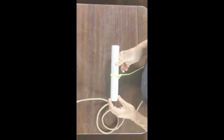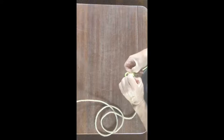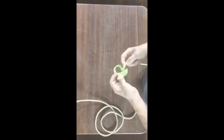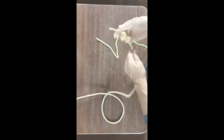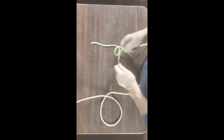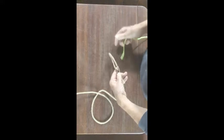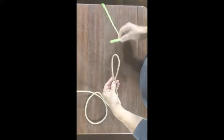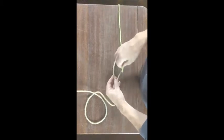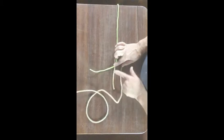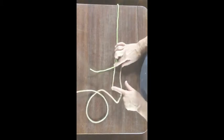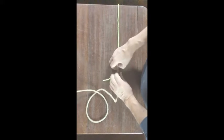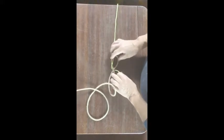Around turn two half hitches. Next one, sheet bend. Joining two ropes together, always make the bite of the rope in the thicker of the two. So there's the bite in the rope, bring your end up, take it over.